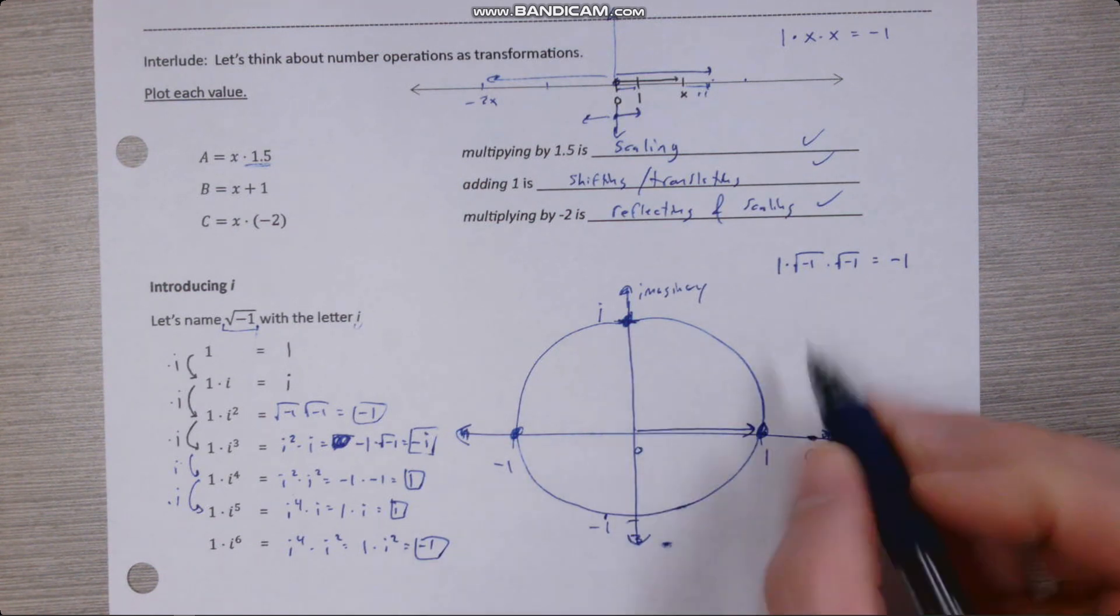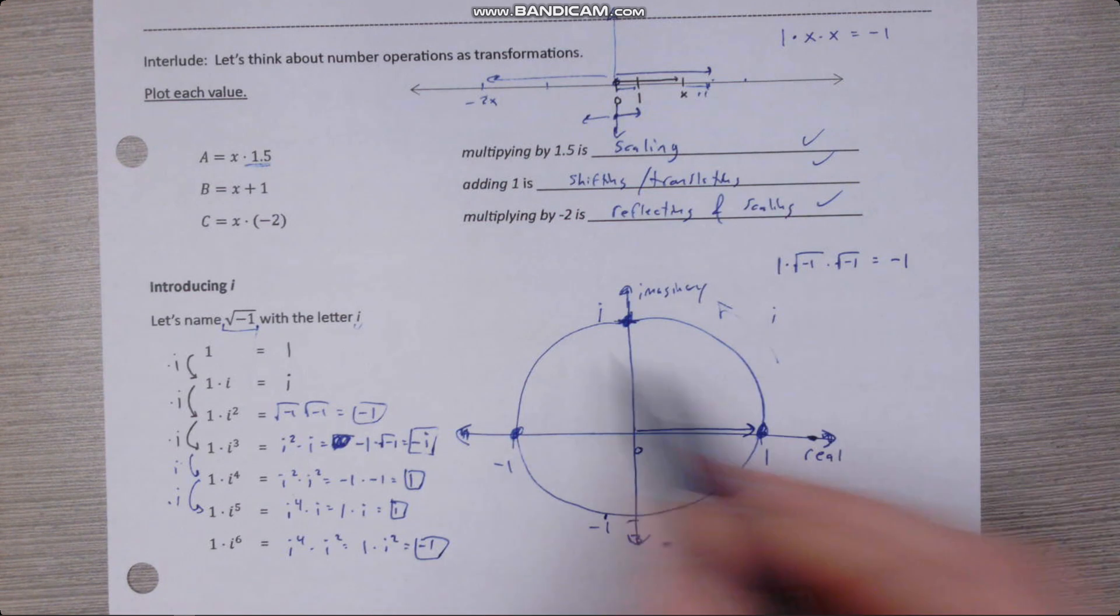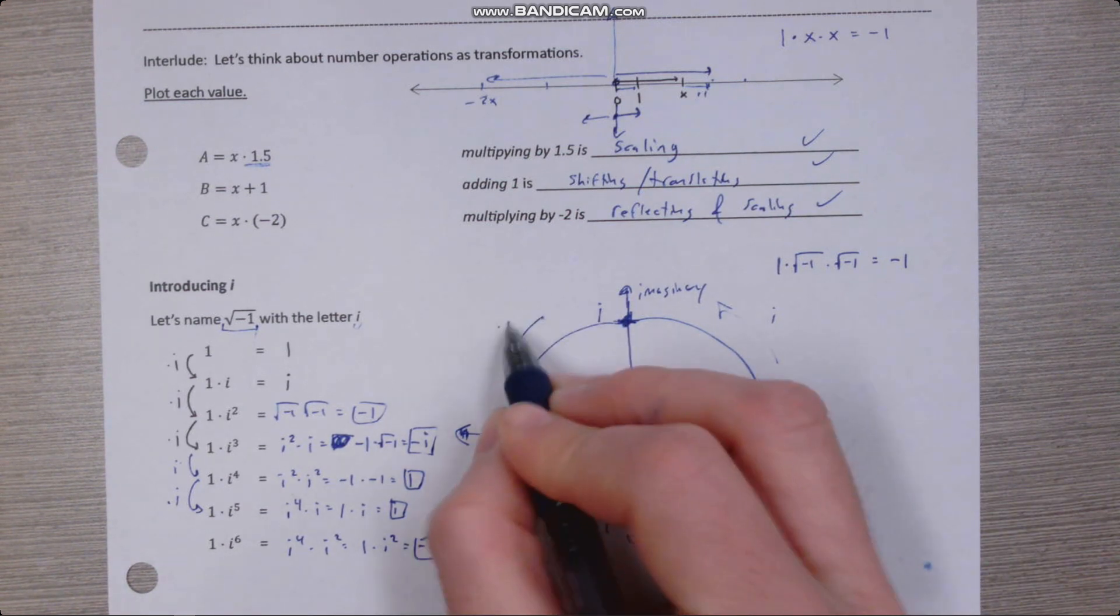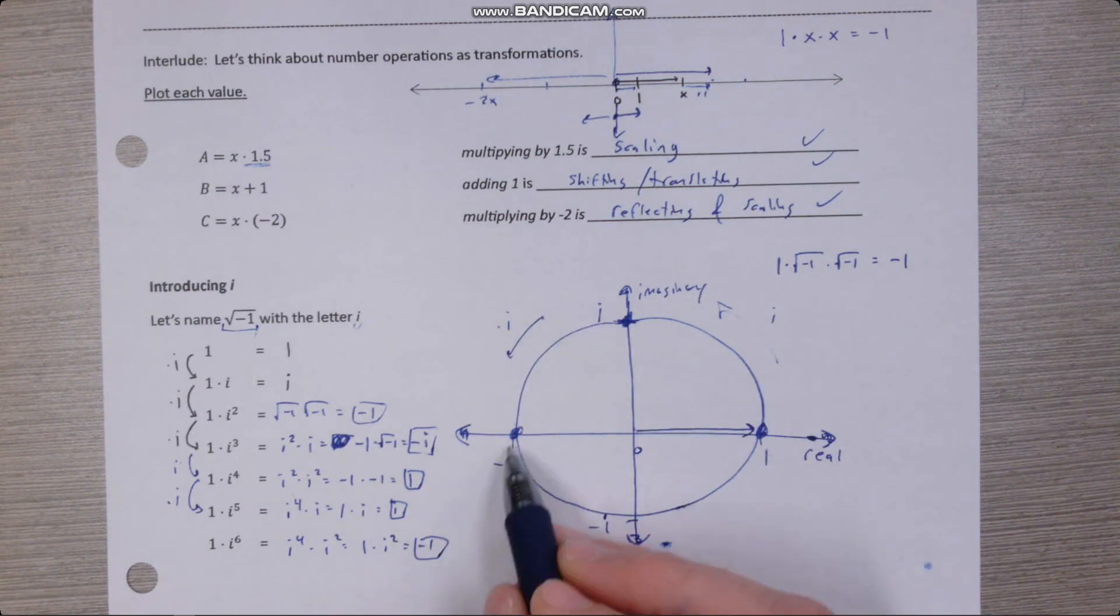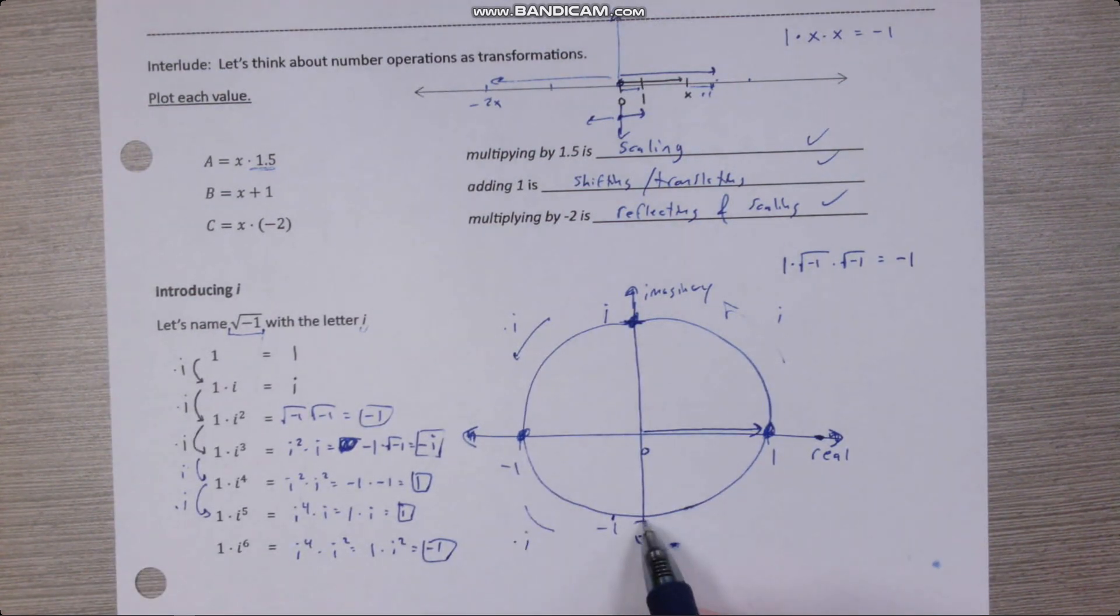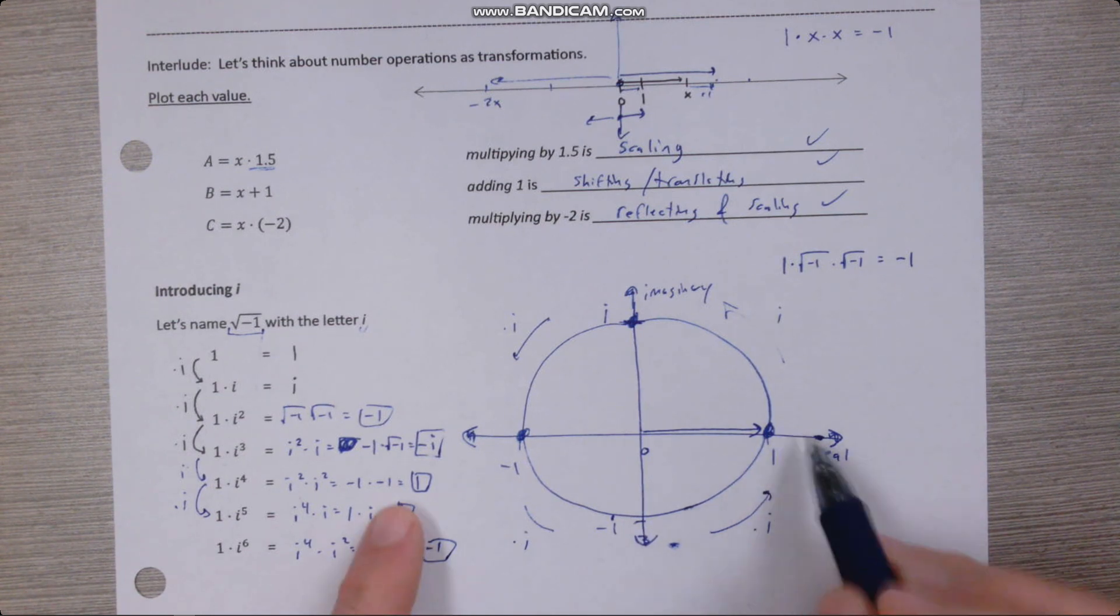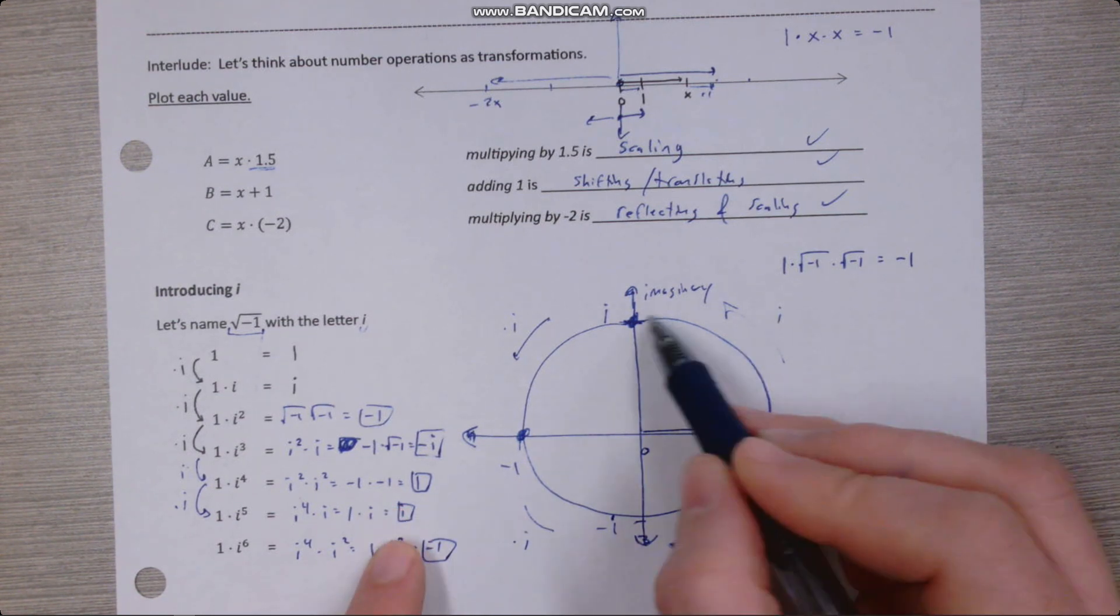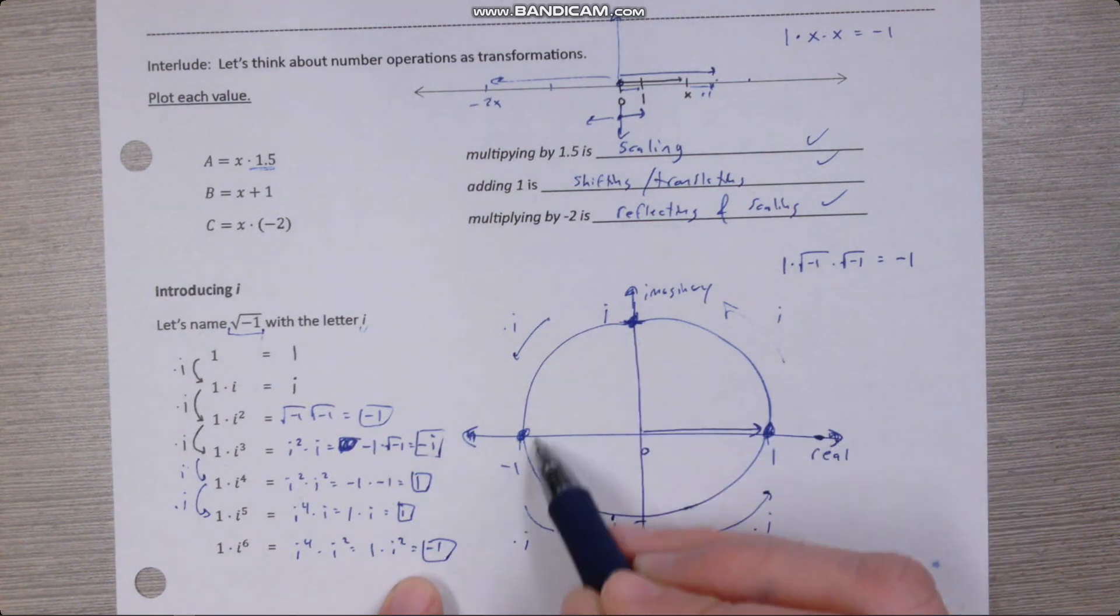So I multiply by i and I get i. I multiply by i again and I get negative one. I multiply negative one by i and I get negative i. I multiply negative i by i and I get one again. And then when I multiply one by i, I'm back to i, and then when I multiply that, I'm back at negative one.